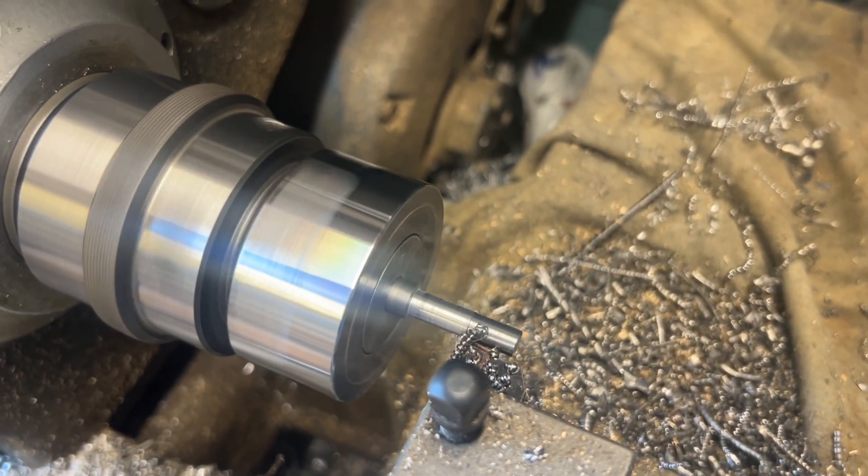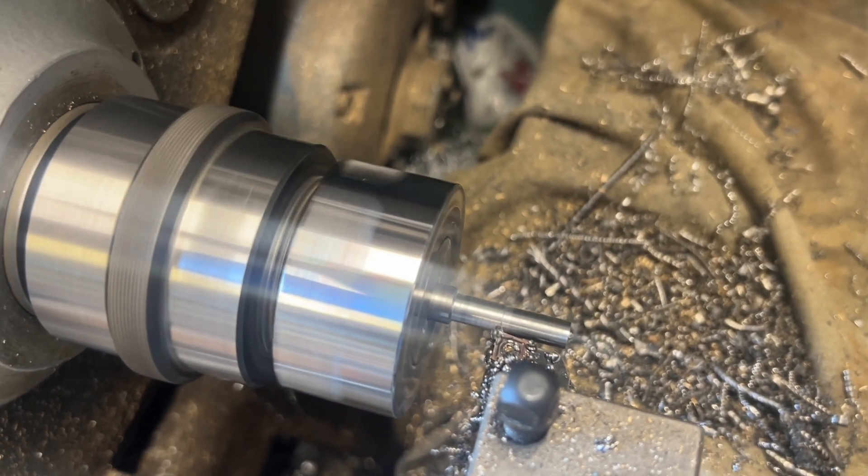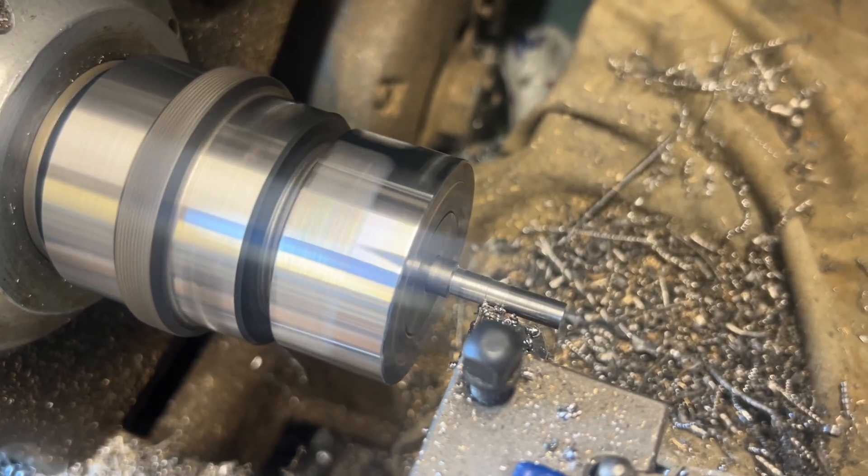We're not using a tailstock, so we started with quite a large diameter to give some rigidity and turned it down to the required 5.5 millimeters outside diameter.